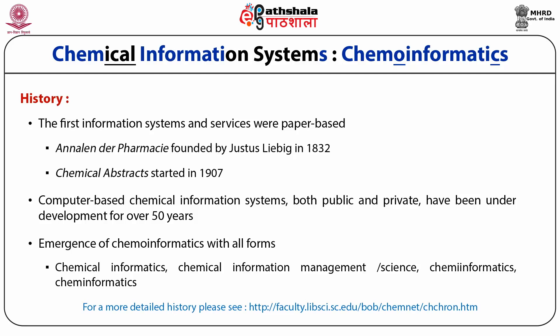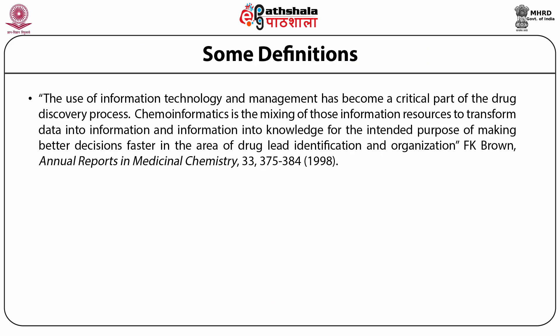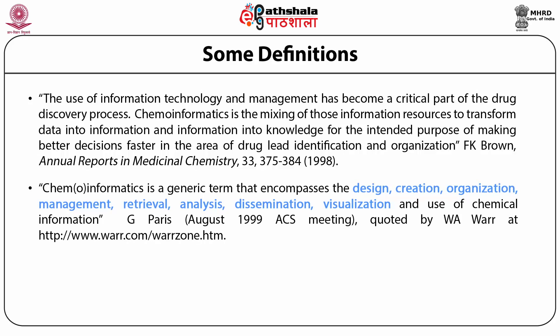Chemoinformatics is a mixing of information required for the drug discovery process, elaborated by FK Brown in Annual Reports in Medicinal Chemistry in 1998. The definition of chemoinformatics has been clearly mentioned in other texts as: designing, creation, organization, management, retrieval, analysis and dissemination, in addition to visualization — which are the most important factors to understand about the drug discovery process.